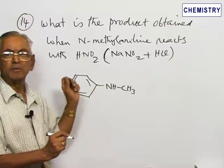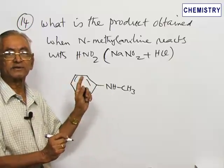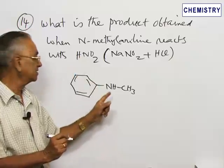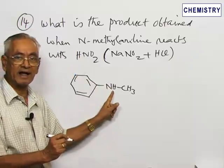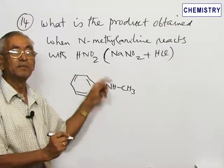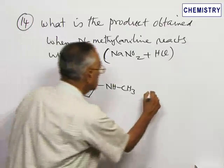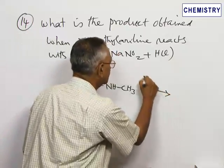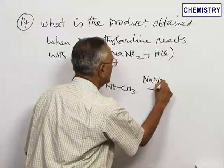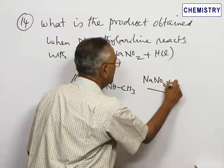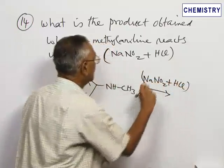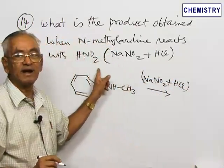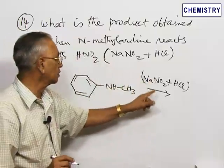One of the important and characteristic reactions of an aromatic secondary amine is that the hydrogen attached to the nitrogen will be replaced by the nitroso group. When it is treated with nitrous acid — normally we write sodium nitrite plus HCl, because nitrous acid is not a reagent which is readily available — it is generated in situ.